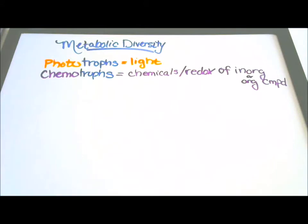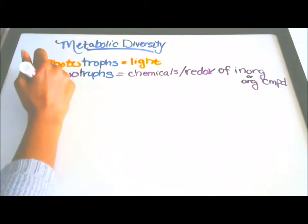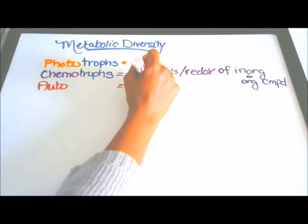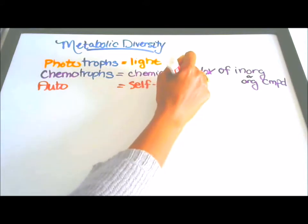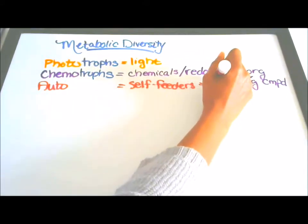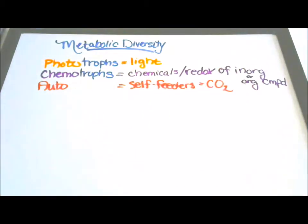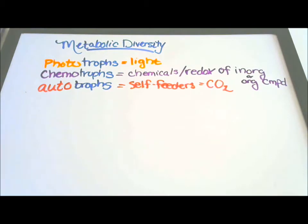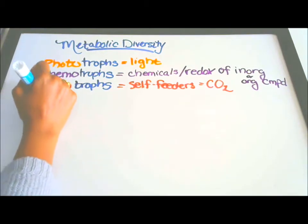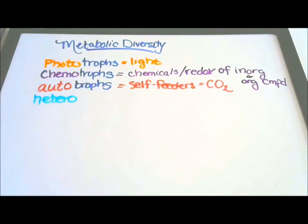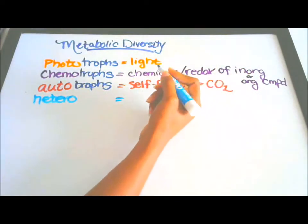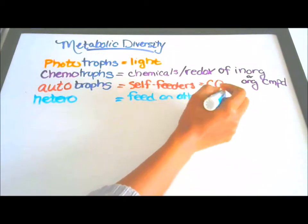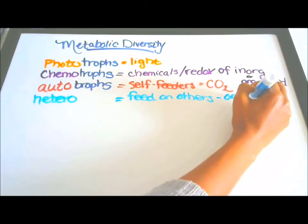Next we have autotrophes, and they are self feeders. They feed on carbon dioxide. Next is heterotrophes, and they feed on others, like an organic carbon source.